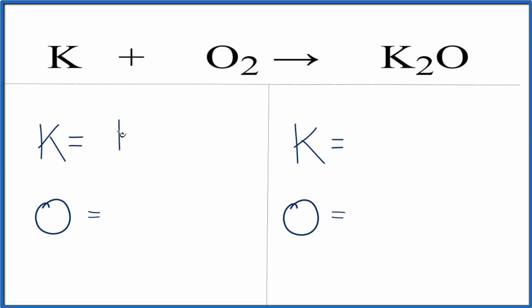We have one potassium and two oxygens. On the product side, we have two potassiums and one oxygen. To balance the equation, we need to get these numbers to be the same on both sides.